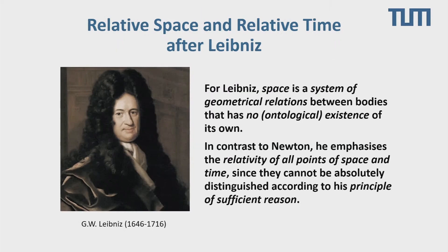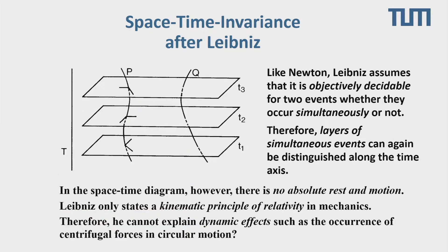For Newton's great competitor Leibniz, space is only a system of geometrical relations between bodies with no ontological existence of its own. Leibniz was mainly a mathematician and philosopher, not a physicist in the modern sense. In contrast to Newton, he emphasizes the relativity of all points of space and time. But this has severe disadvantages: he cannot explain, by his kinematic principle of relativity, dynamic effects such as centrifugal forces in circular motion.